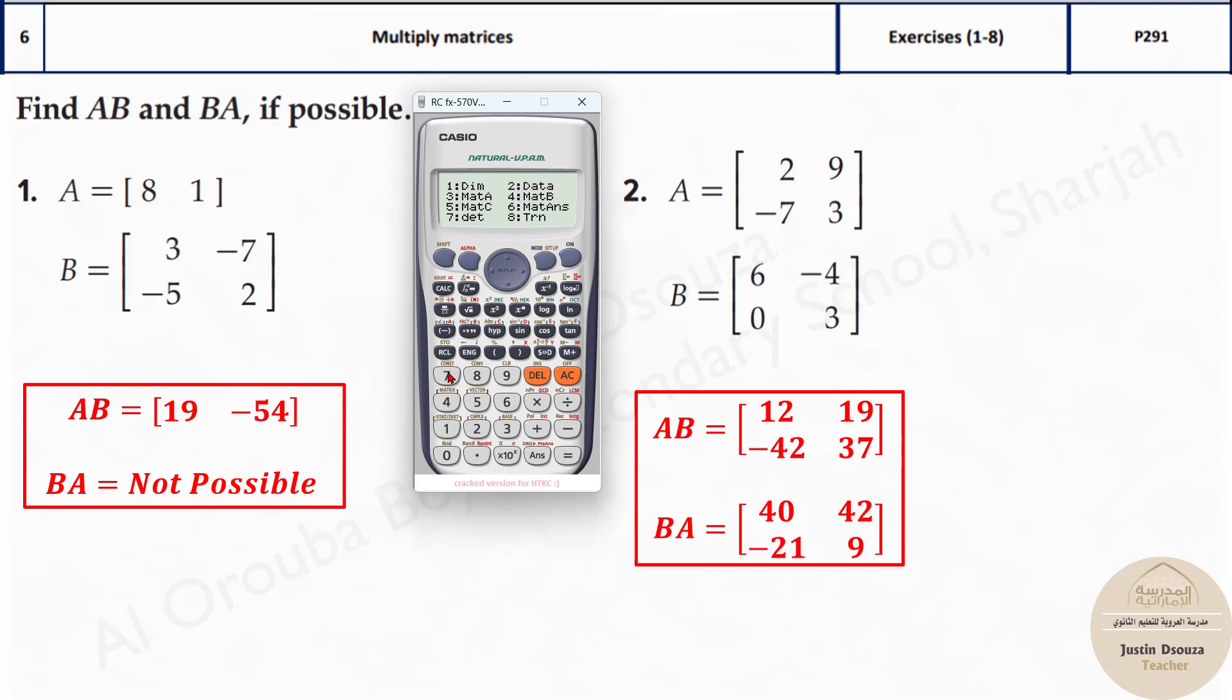Now shift 4, press dimension and type the matrix B, that is option 2. This is 2 cross 2, that's option number 5, and now we have 3, minus 7, minus 5, and positive 2. Both the matrices are saved now.